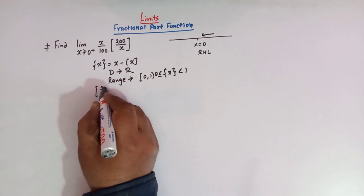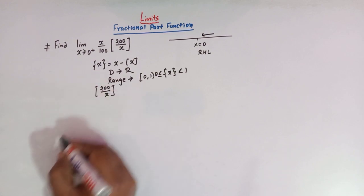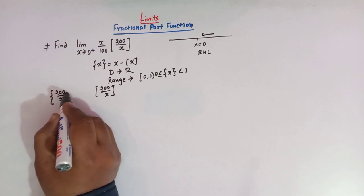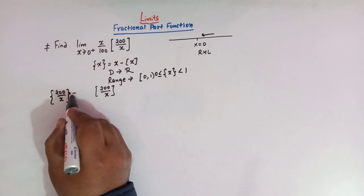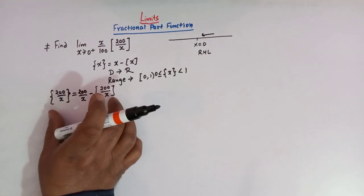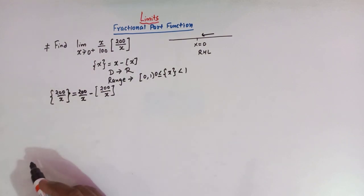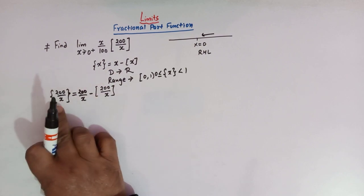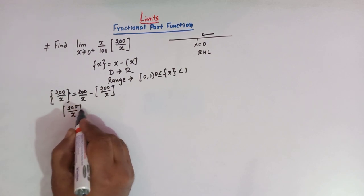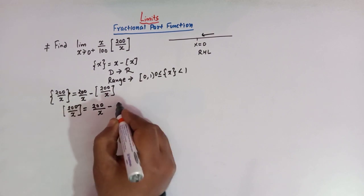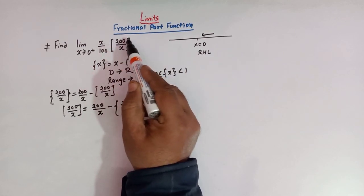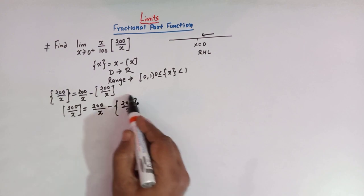Here we have 200 over x — the greatest integer of 200 over x. The fractional part of 200 over x can be written using this definition as: 200 over x minus the greatest integer of 200 over x. If we rearrange, the greatest integer of 200 over x equals 200 over x minus the fractional part of 200 over x. This greatest integer term will now be replaced by this expression.